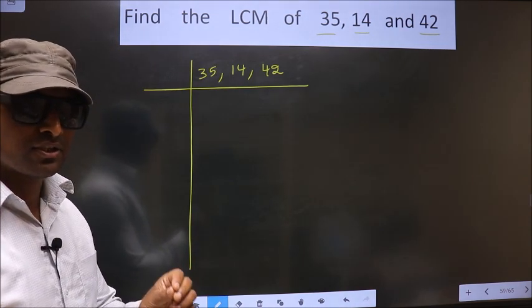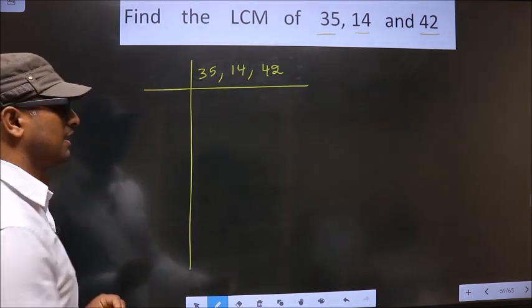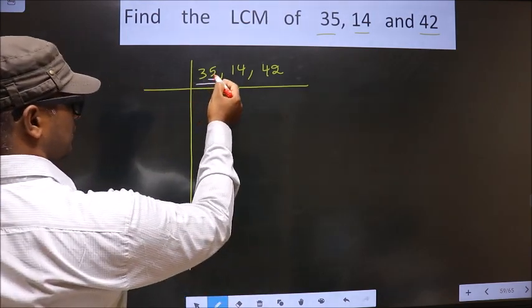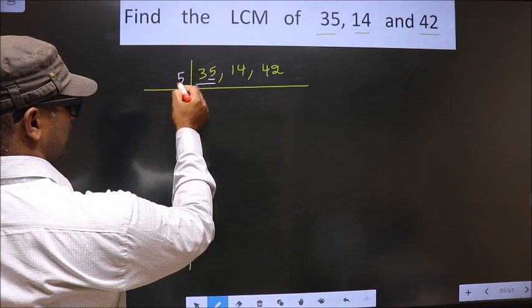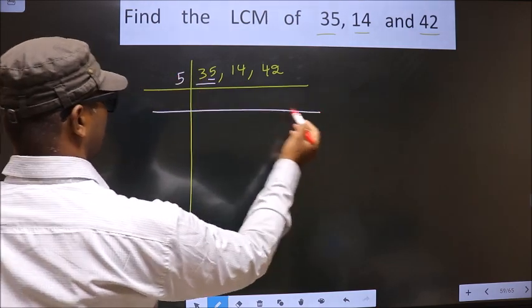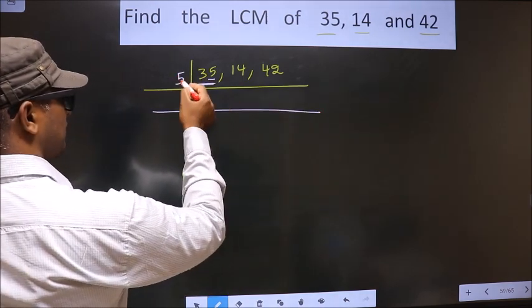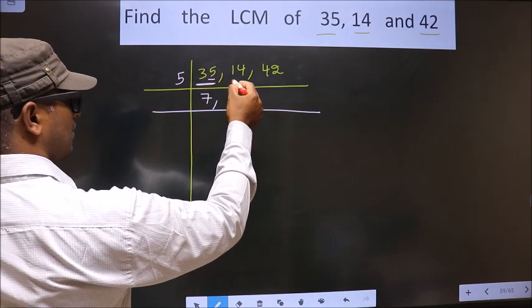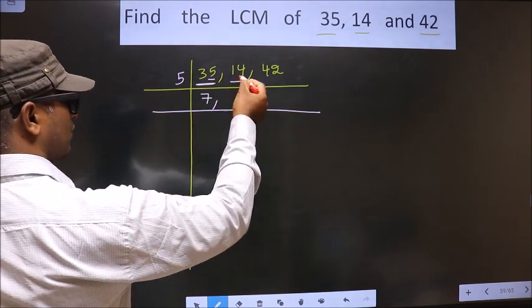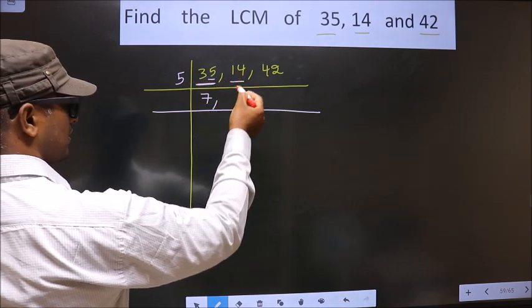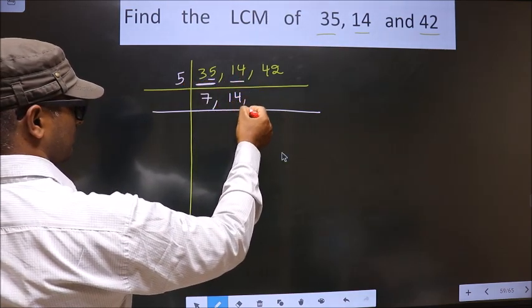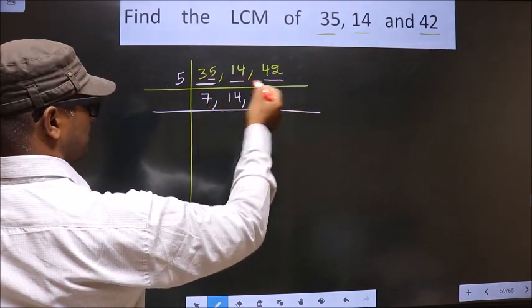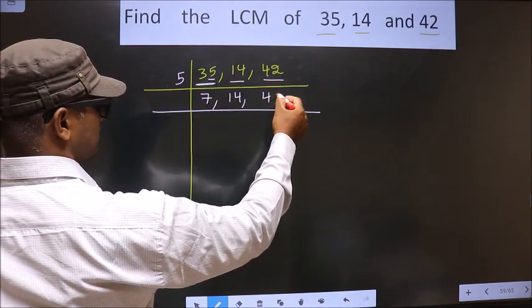Now we should focus on the first number, that is 35. Here for this number last digit is 5, so I take 5 here. Now when do we get 35 in 5 table? 5 times 7 is 35. Now other number is 14. 14 is not divisible by 5, so you write down as it is. The other number is 42. 42 is not divisible by 5, so you write down as it is.